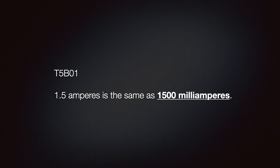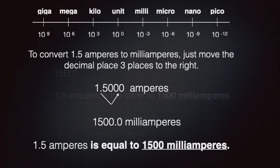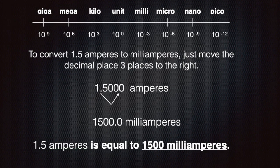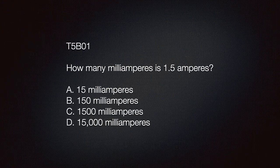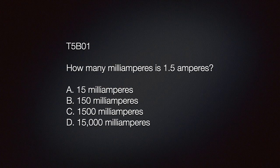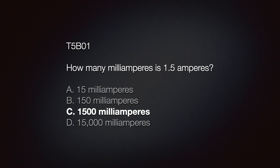We need to know that 1.5 amperes is the same as 1500 milliamperes. To convert 1.5 amperes to milliamperes, just move the decimal place three places to the right. The associated question is: how many milliamperes is 1.5 amperes? A) 15 milliamperes, B) 150 milliamperes, C) 1500 milliamperes, or D) 15,000 milliamperes. The correct answer is C, 1500 milliamperes.